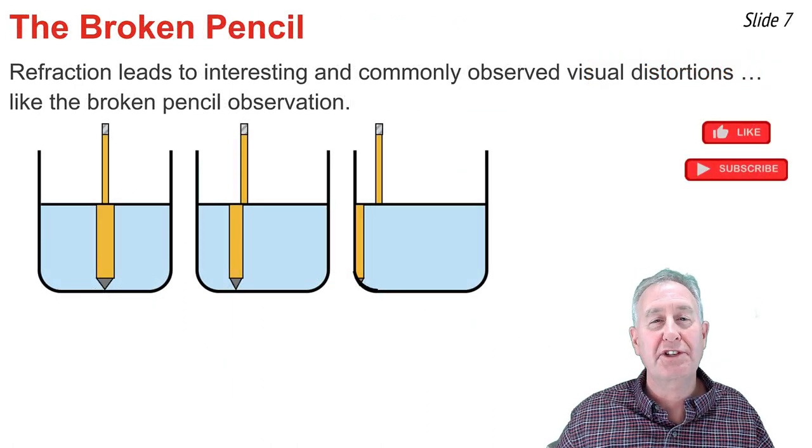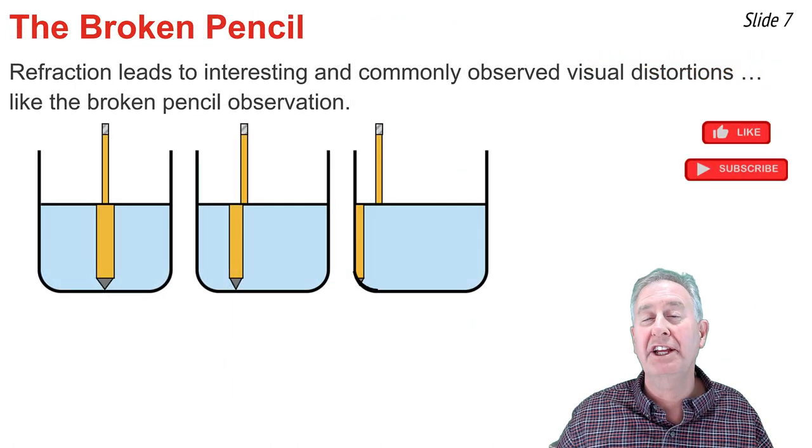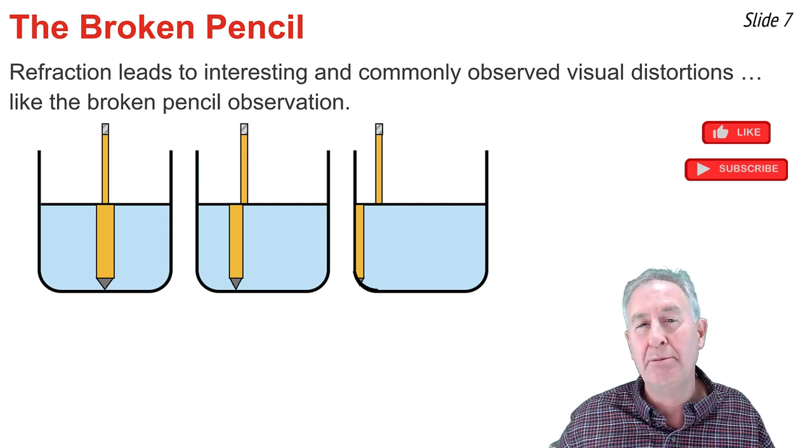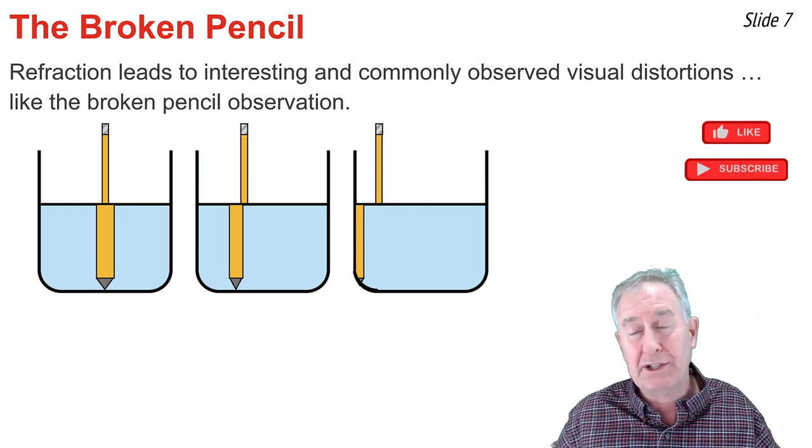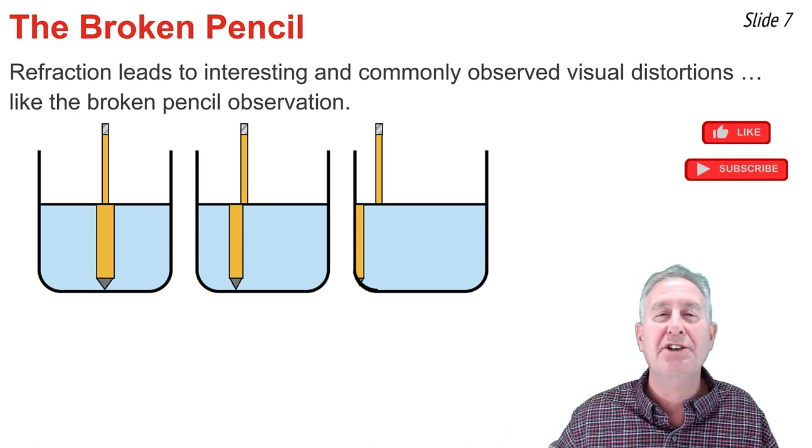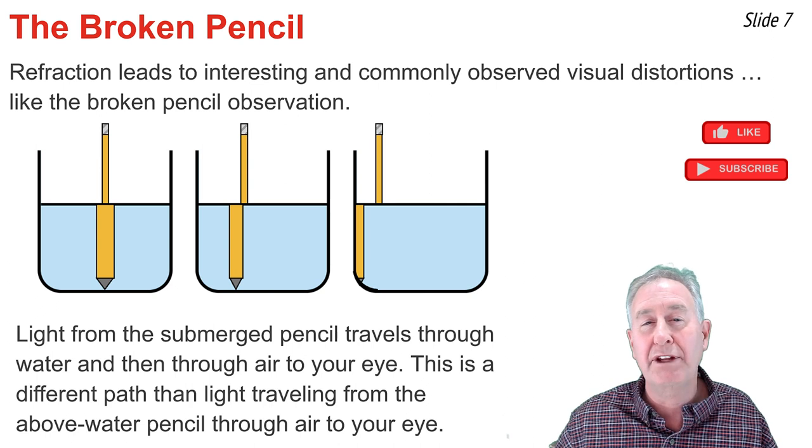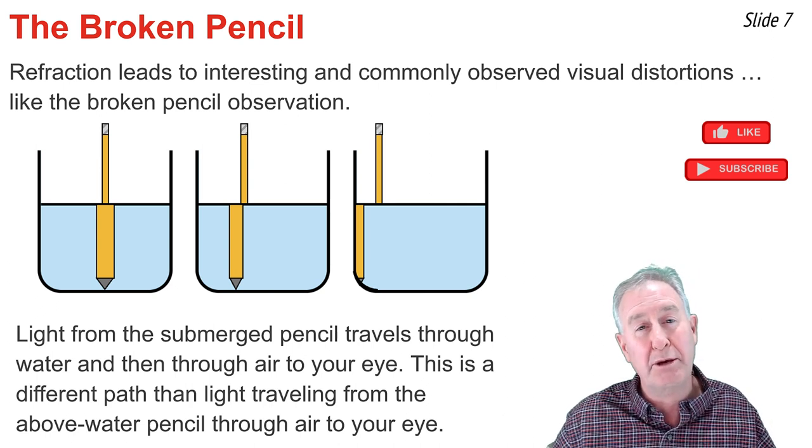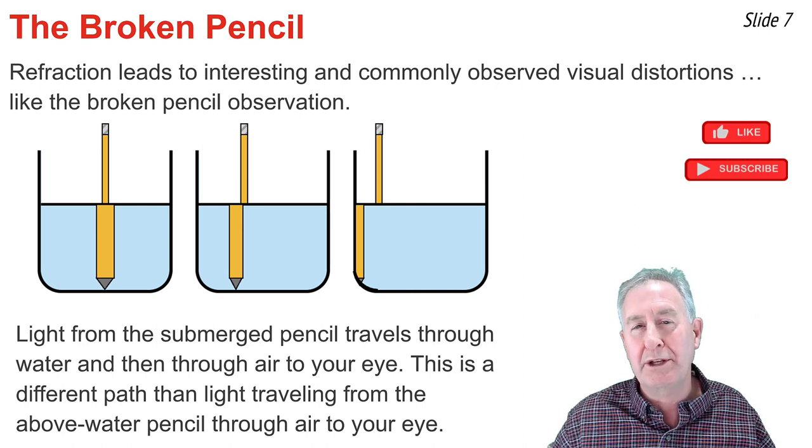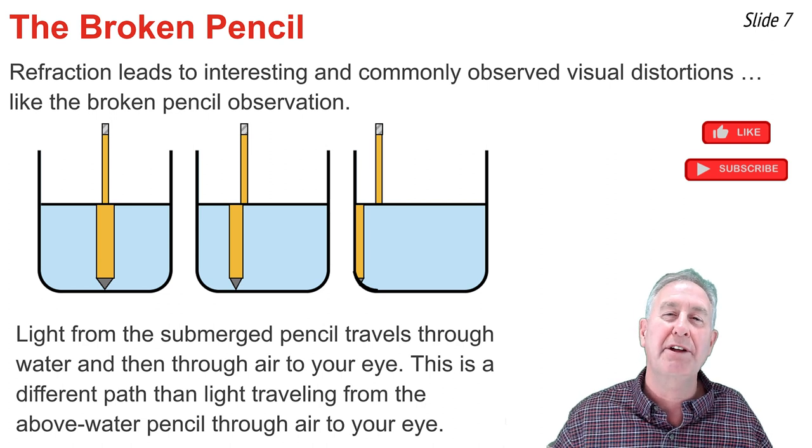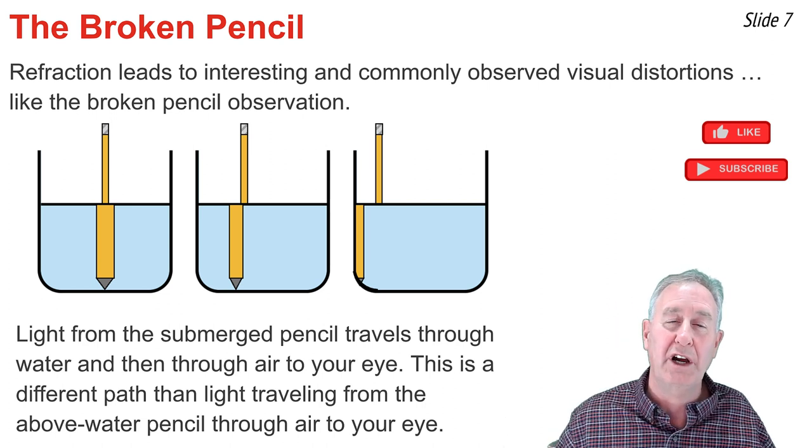Refraction leads to some interesting visual distortions that you've likely encountered through the years. One of those is what I call the broken pencil phenomenon. If you take a beaker and half fill it with water and place a pencil in it, and then move the pencil from side to side, you're going to observe things like those shown here in this diagram. This occurs because of refraction of light. Light traveling from the submerged pencil to your eye will travel along a different path than light from the above water pencil to your eye.